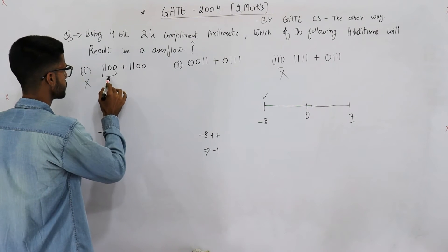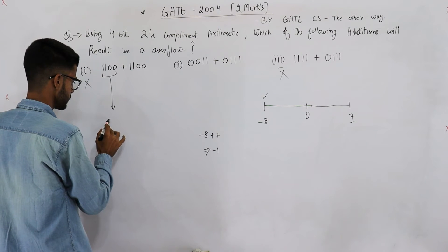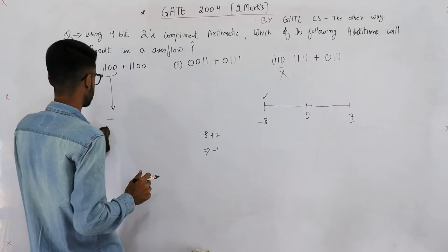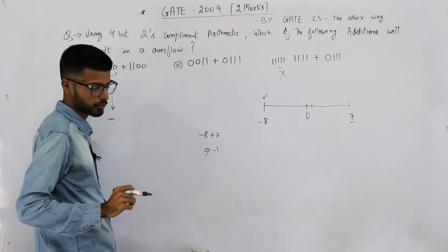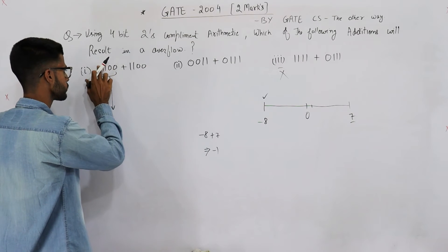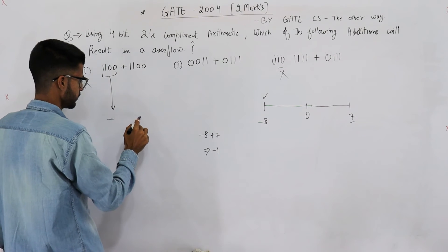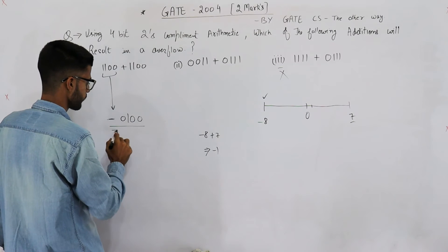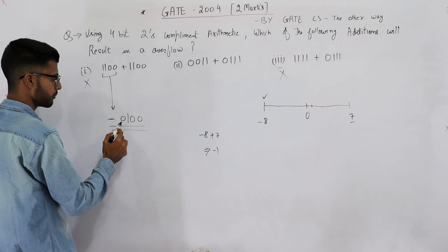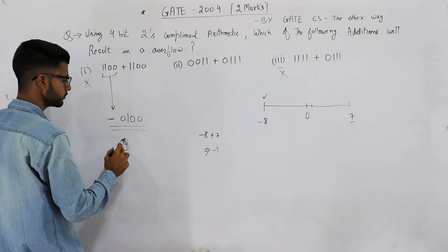How is this -4? Let's see. This number begins with 1, that means it's a negative number. Second thing, we are using 2's complement number system, so take 2's complement of this number, that is 0010. So this is -4.